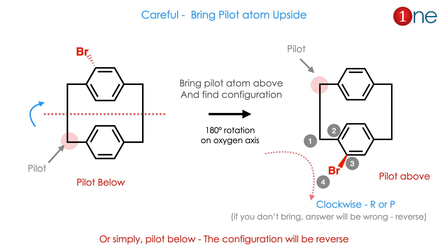Here is shown a compound with bromine where the pilot atom is below the plane. If you do the numbering straight away without correction, you will commit a mistake in finding the R and S configuration. What you have to do is rotate so the pilot atom comes above the plane. Then do the numbering: one, two, three, four — it is clockwise, giving R configuration, also called P configuration. If you are an advanced user, remember: if the pilot is below the plane, the configuration will be reversed.